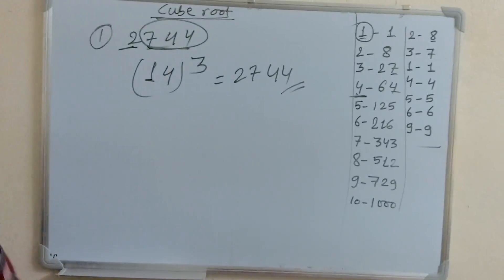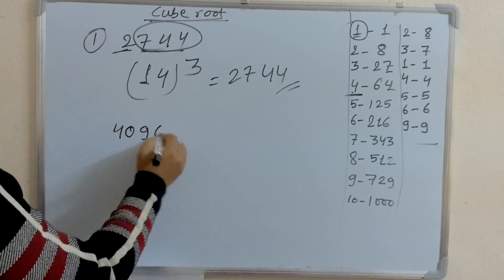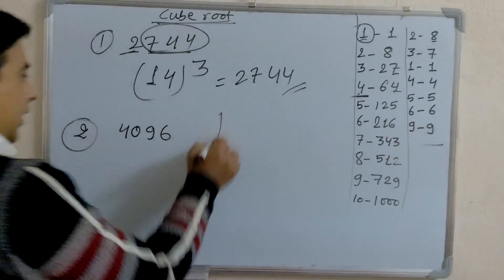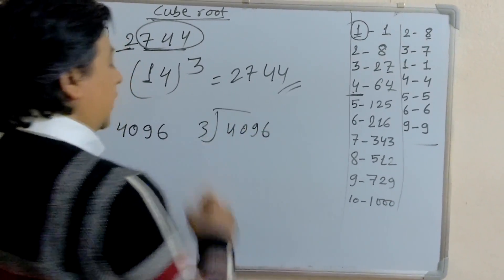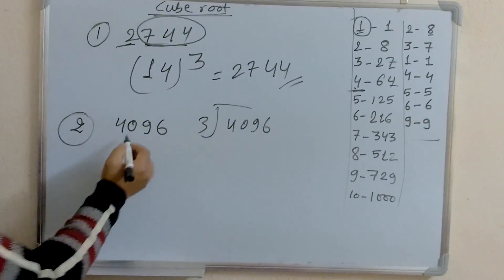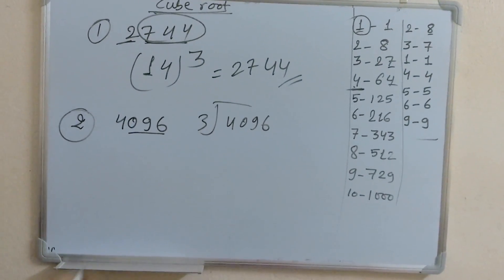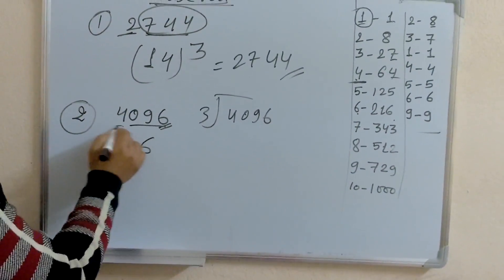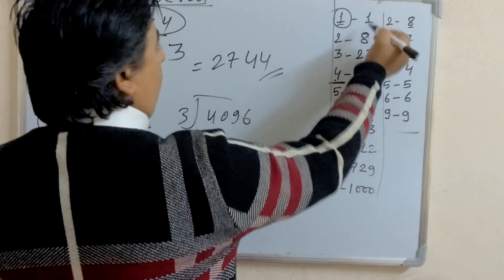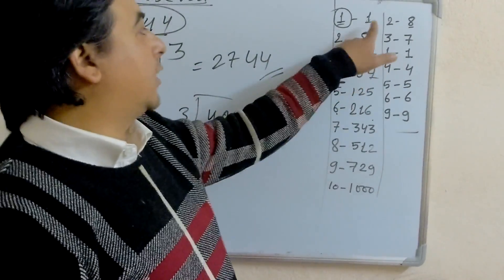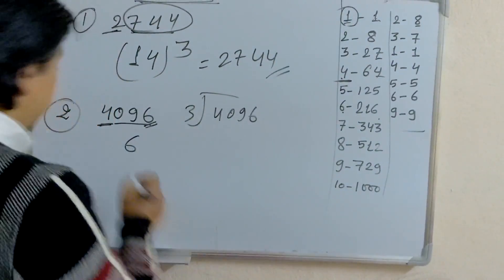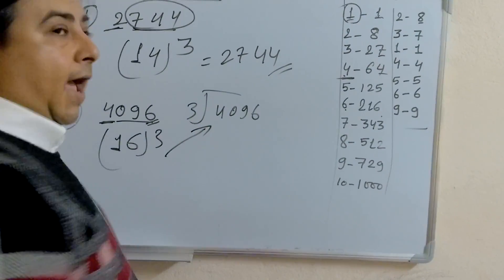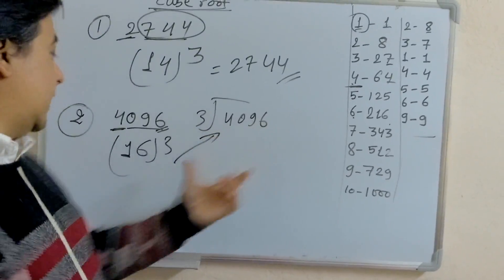Let's take the next example: 4096. Take the last 3 digits and see the last digit — it is 6. The last digit 6 corresponds to 6 cube, so write 6. The remaining number is 4, which lies between 1 and 8, so take the smallest one — that is 1 cube, so write 1. Therefore, 16 cubed equals 4096, and the cube root of 4096 is 16.